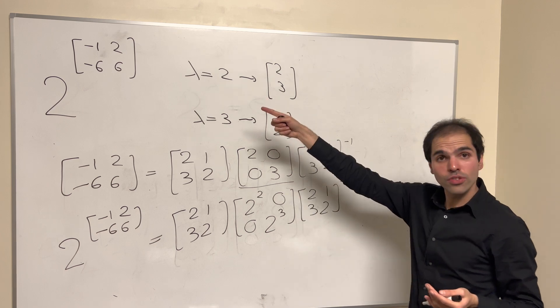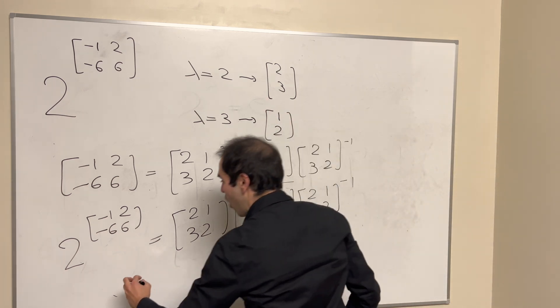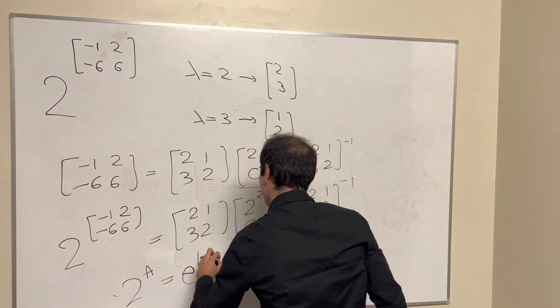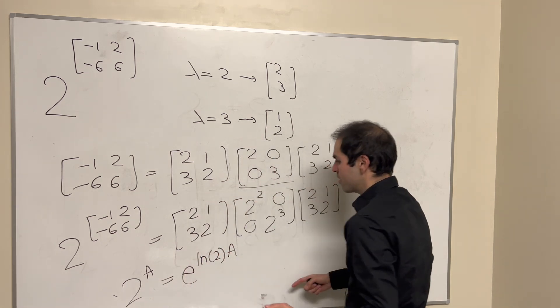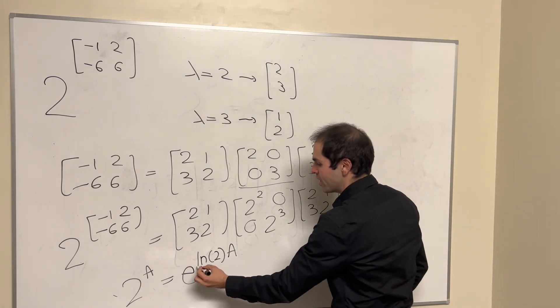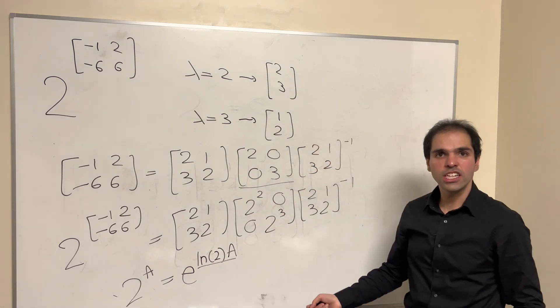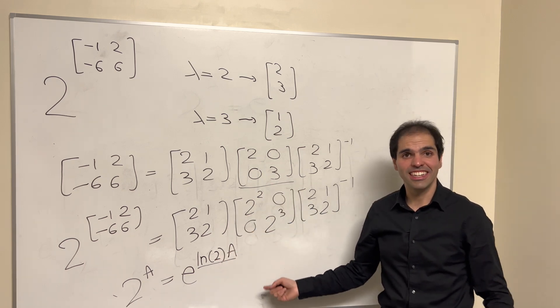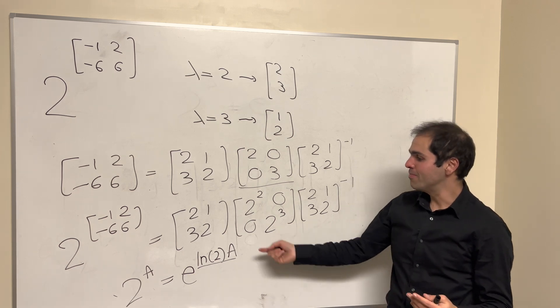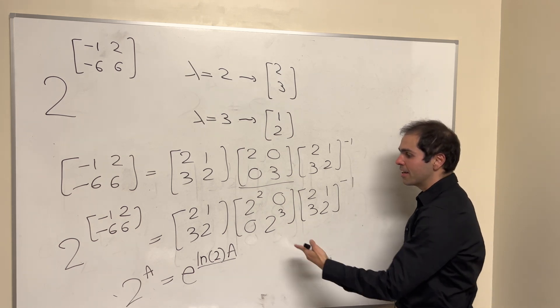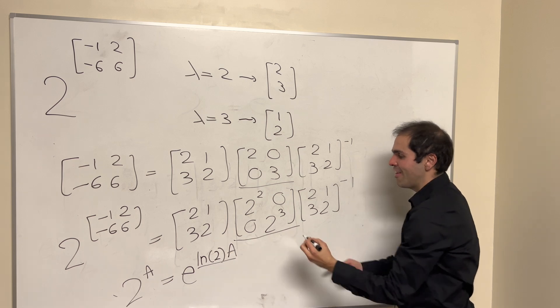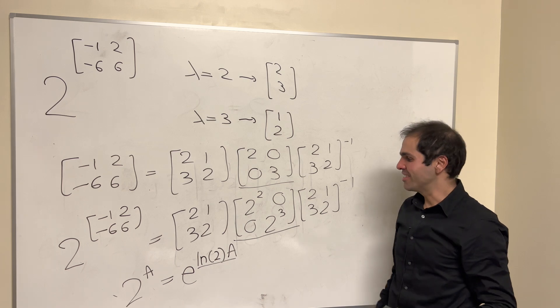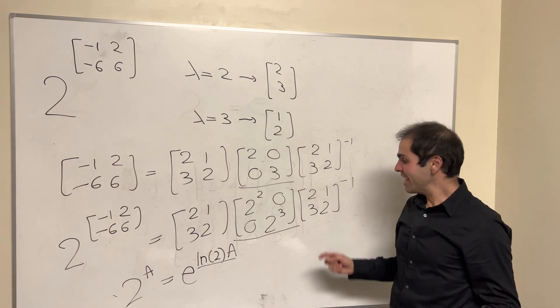And by the way, in case you're curious why this works, all we did, we used 2 to the A, is E of ln of 2 times A. So technically what we did, we took our matrix, multiplied each entry by ln of 2, and then exponentiated this, using a previous video that I've done on matrix exponentials. But eventually you'll see that the effect is just on the diagonal matrix. This is why diagonalization is so important. All right, let's now do it.